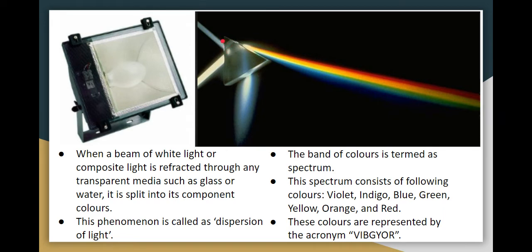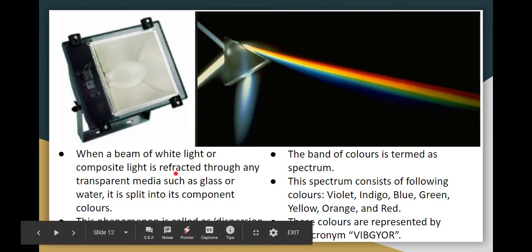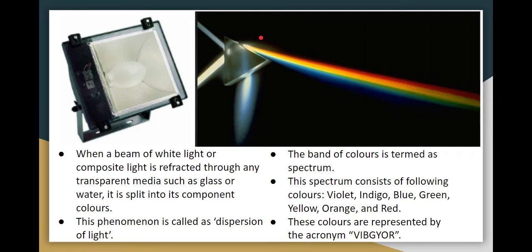A white light passing through a transparent glass prism refracts into a spectrum of component colors. A beam of white light through a transparent glass prism causes the component colors to split — this is called dispersion of light. This band of colors is called a spectrum: Violet, Indigo, Blue, Green, Yellow, Orange, Red — abbreviated as VIBGYOR.